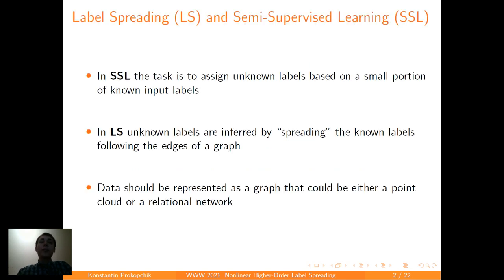We'll be dealing with a semi-supervised learning task in which we have to assign unknown labels based on a small portion of known input labels, and our algorithm will be based on a label spreading algorithm in which the unknown labels are inferred by spreading the known labels following the edges of a graph, which means the data should always be represented as a graph, and that can be either a point cloud or a relational network.